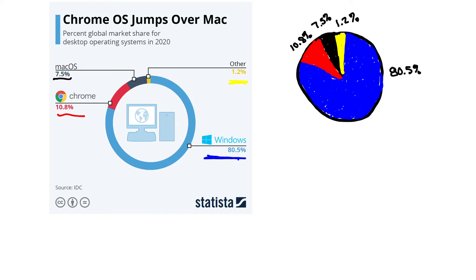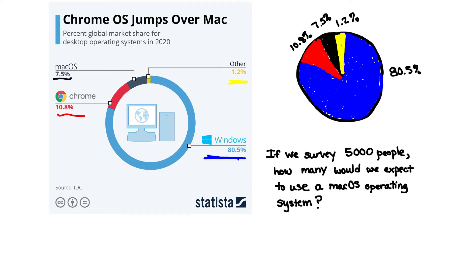Pie graphs, or circle graphs, are a wonderful way to visualize data, but they also help us to answer more questions. For instance, let's consider the following: if we survey 5,000 people, based on this information from this pie graph, how many would we expect to use a Mac OS operating system? How would we go about solving this problem?